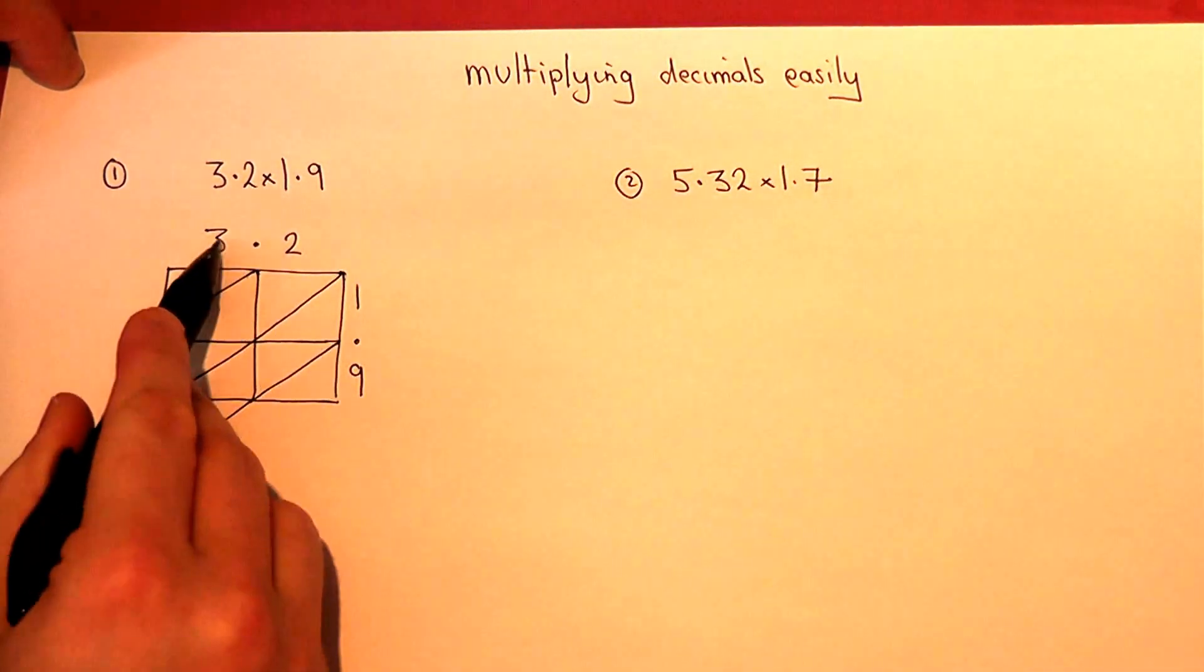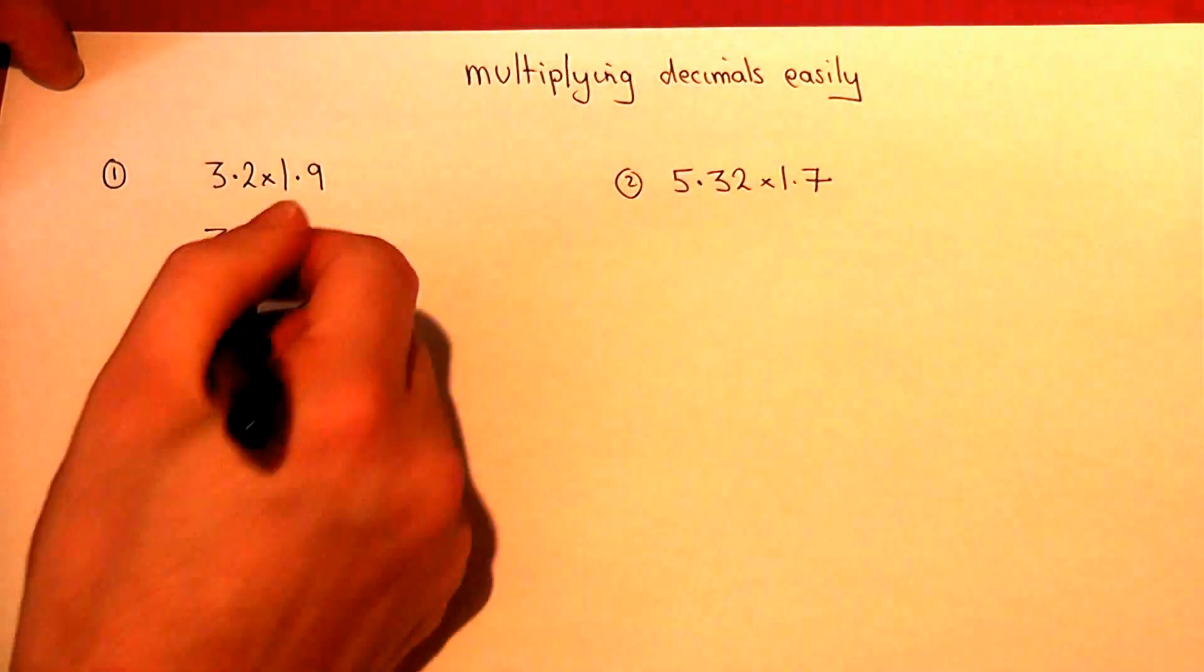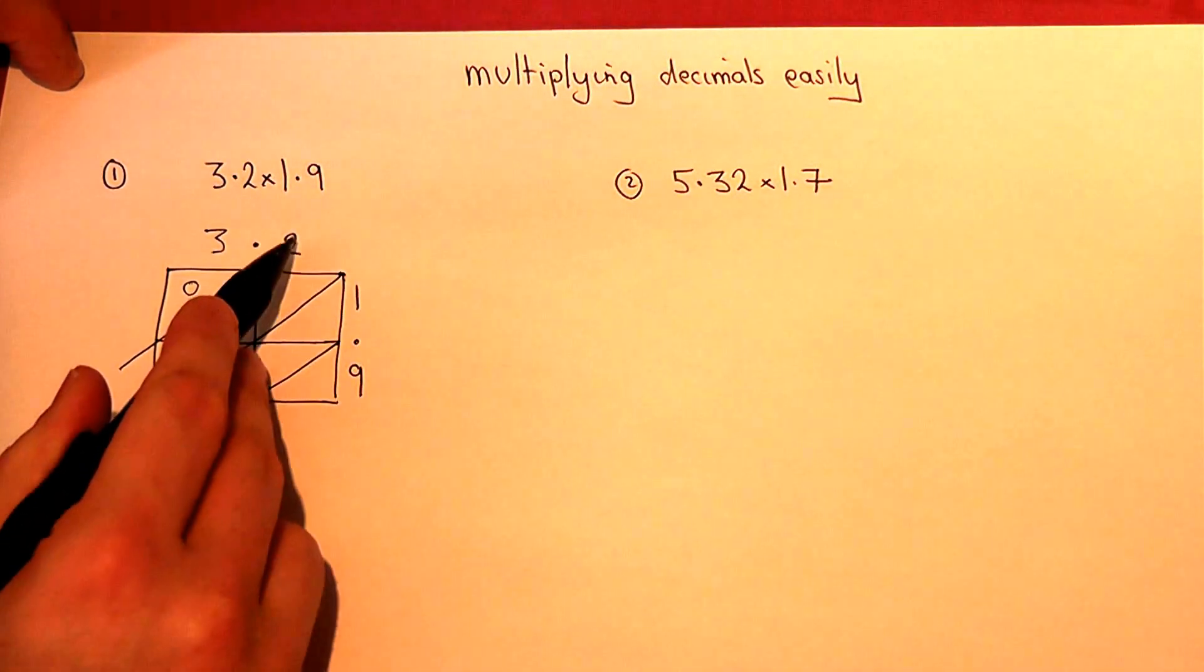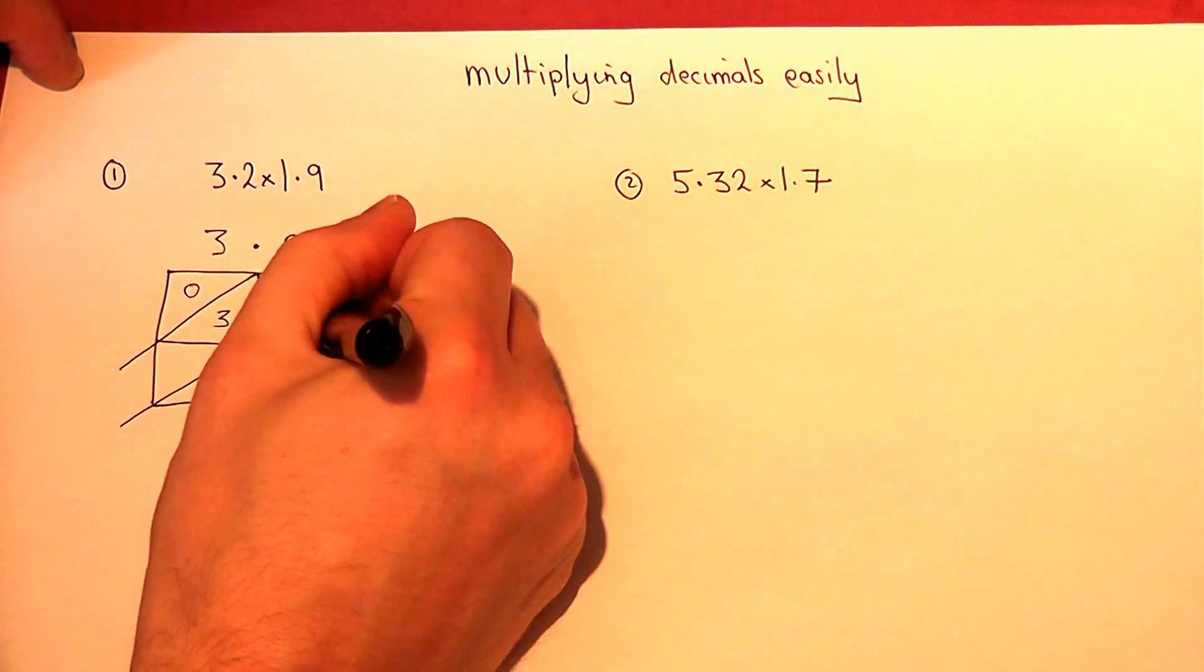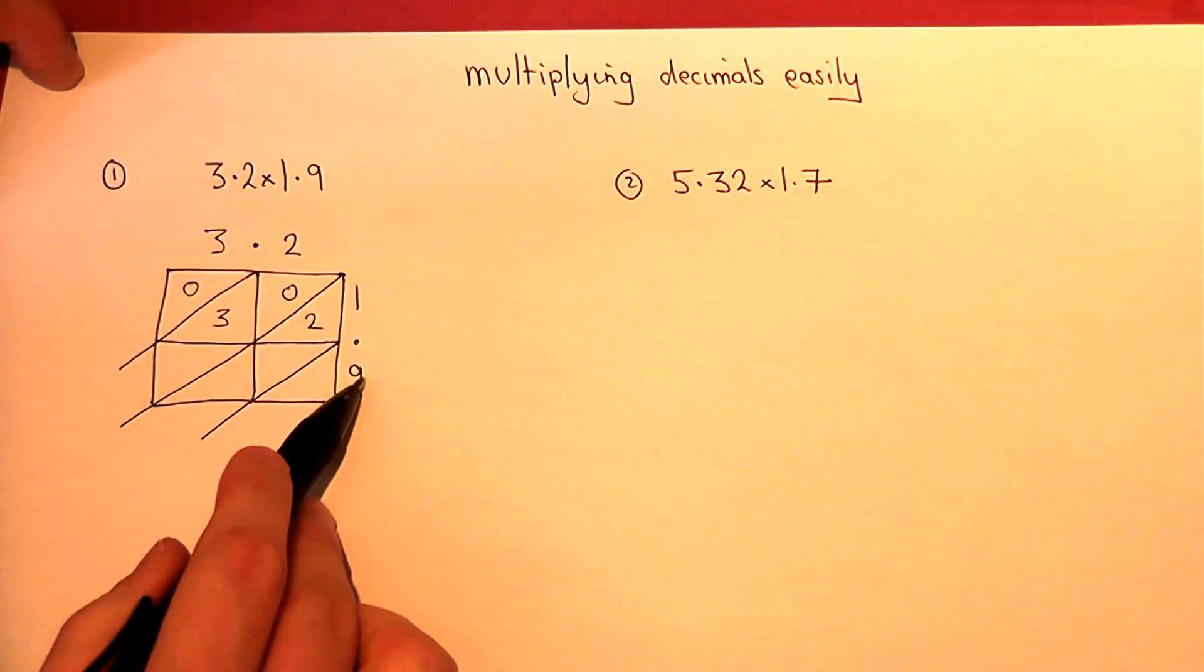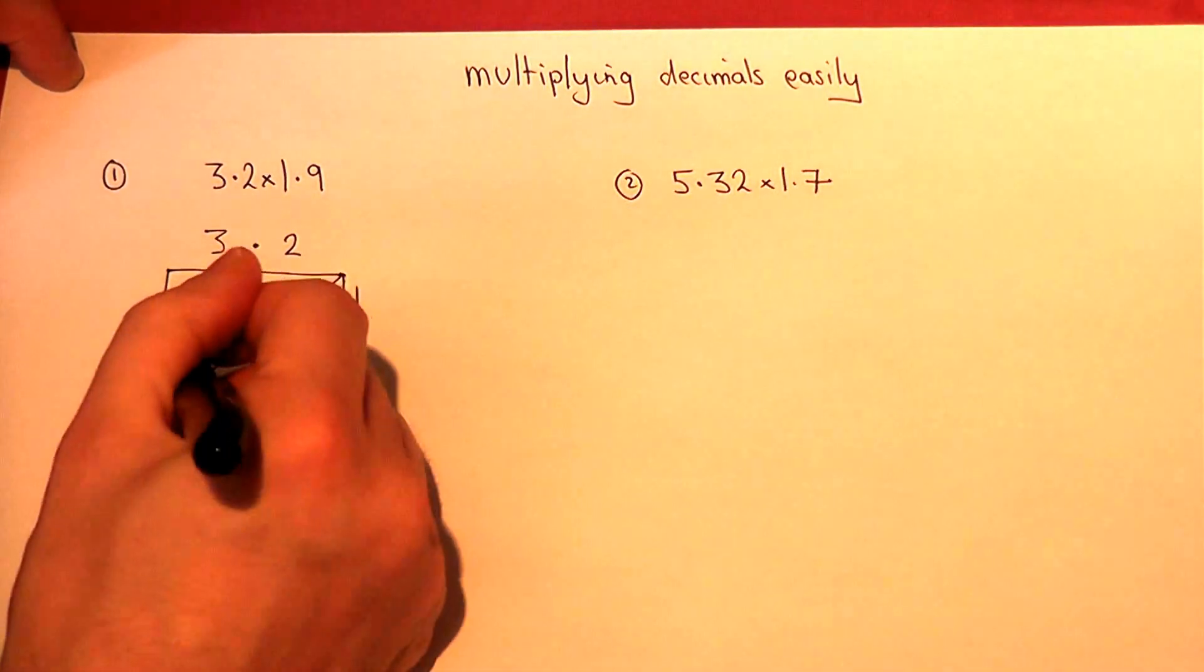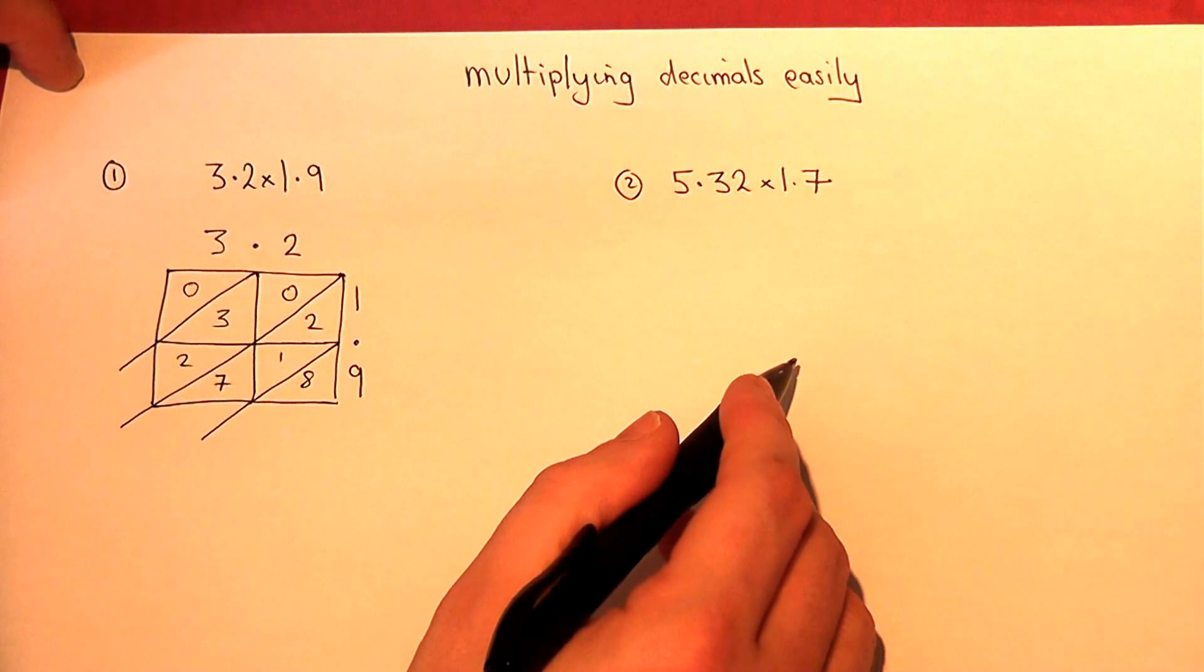Right then. Three lots of 1 is 3, so I put 0, 3. No tens, 3 units. 2 times 1 is 2. 2 times 9 is 18. 3 times 9 is 27. So, that's just simple times tables.